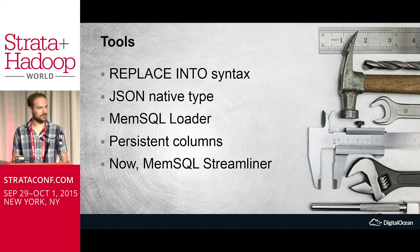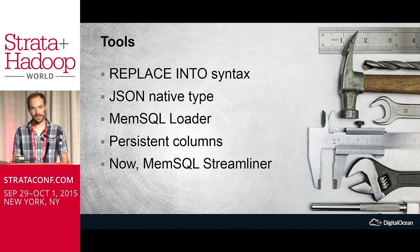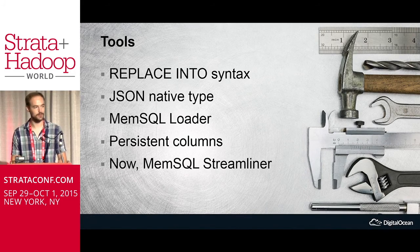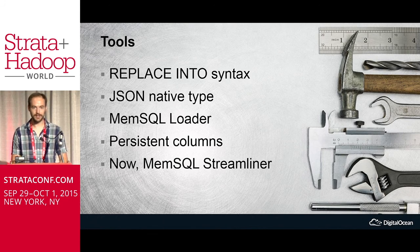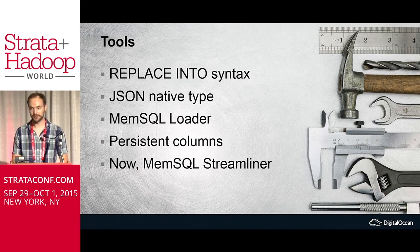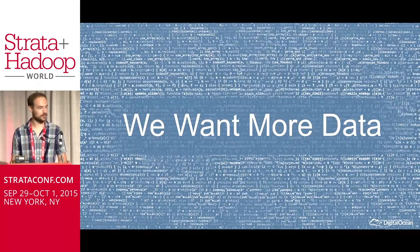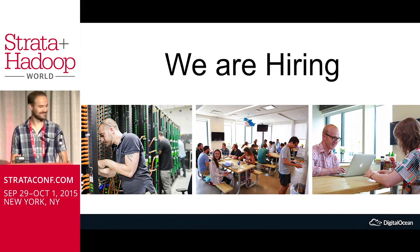So we've used the replaceInto syntax to build some really quick update/insert ETL ourselves. We've definitely utilized the JSON native type — it allows our SQL team to roll with new data as new events come in with this ever-changing schema. The MemSQL loader helps us pipe files directly into MemSQL, and we have persistent columns for doing ETL jobs inside of MemSQL. What we're excited for next is Streamliner, which just launched. The next problem we face at DigitalOcean is we've got a taste of how valuable data can be and we want more — and I think our next solution is we're hiring. Thanks.